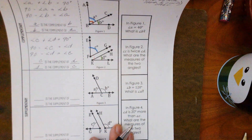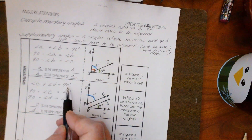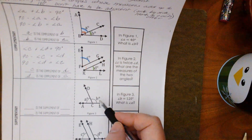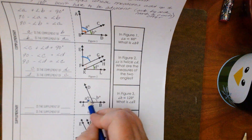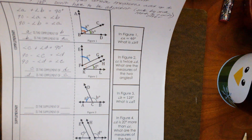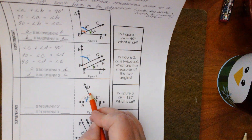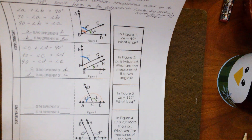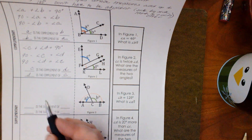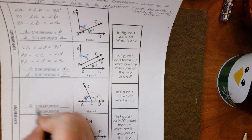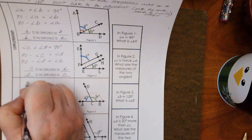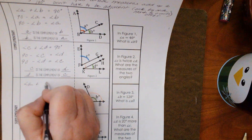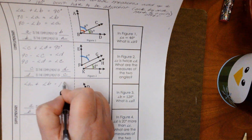Now we're going to go to the supplementary — and notice these equal 90 degrees, where these equal 180 degrees. So if we look at A and we look at B, the total — if we go all the way — the total of all the angles will be 180. So A is the supplement of B, and B is the supplement of A.